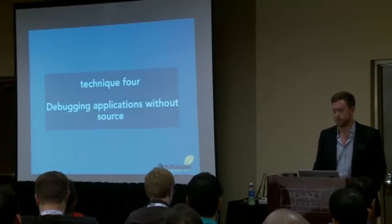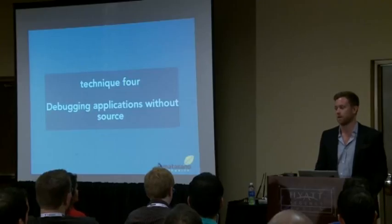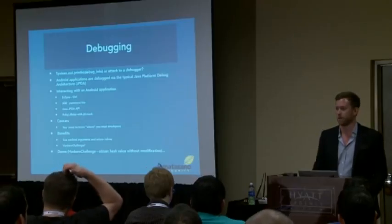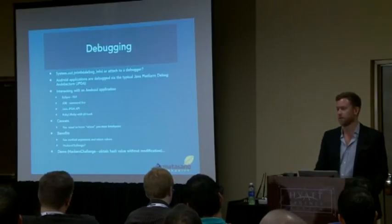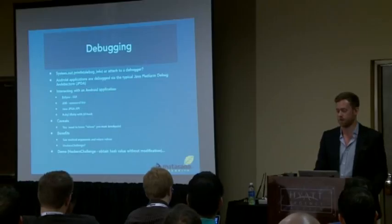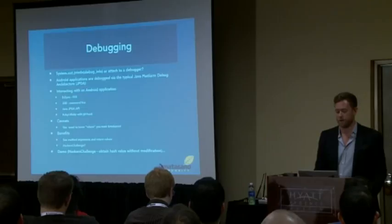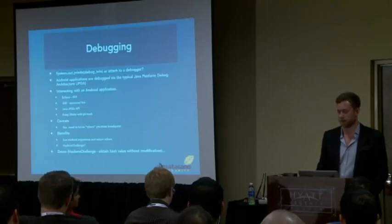Since the Hacker Challenge app failed to authenticate because we modified it, we need another way to get the hash. The next technique is debugging. The Android OS provides the Java Platform Debug Architecture (JPDA), with an API that Eclipse manages well, plus JDB as a command-line interface and JDI Hook as a Ruby implementation. The only problem without source code is you need to know exactly where to set breakpoints in the application.